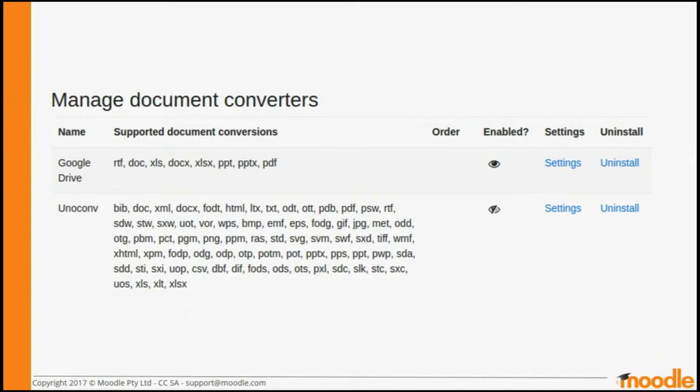If you're already using the new Google Drive integration, you'll have already set up all the authentication and system accounts you need. All you would need to do is just click on this little toggle and enable the document converter — there's no other installation required. If you aren't using the Google integration, maybe you're using Office 365 or none of those things, you can still set up this document converter and use it without any of the other pieces of the Google integration, so people don't even have to know you're using it behind the scenes.